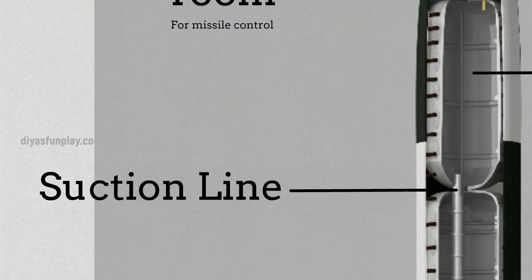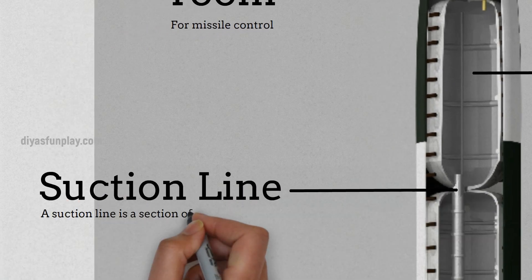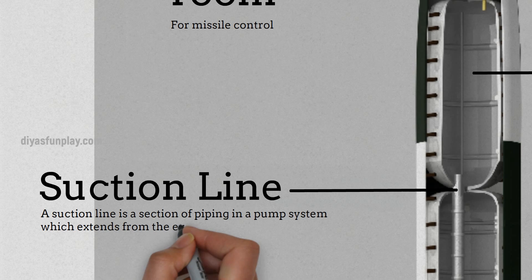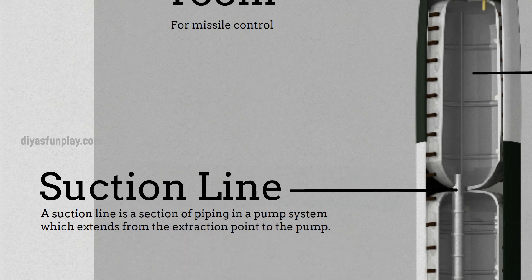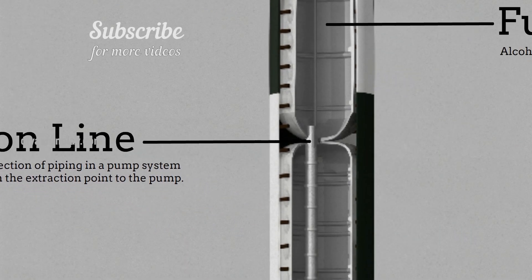Suction line. A suction line is a section of piping in a pump system which extends from the extraction point to the pump.